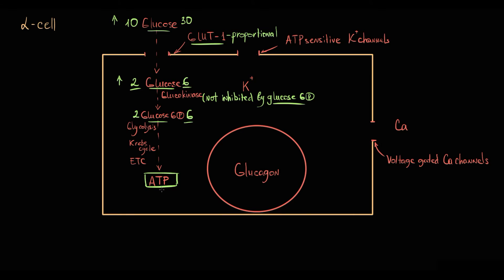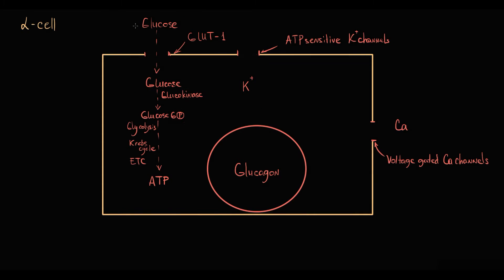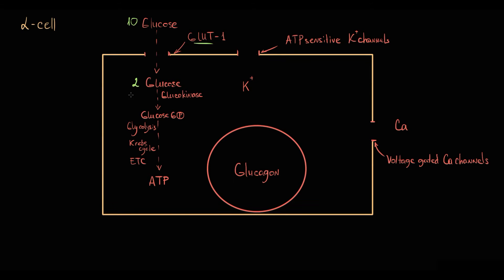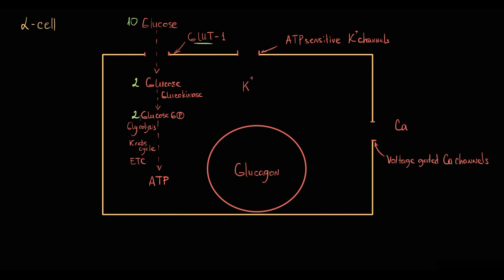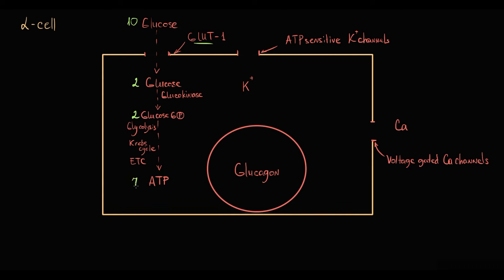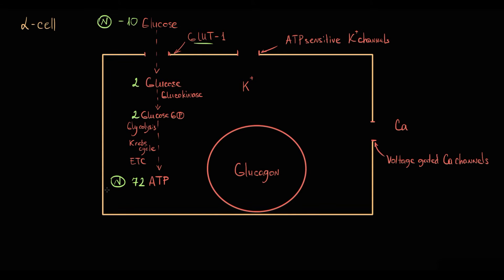By the amount of ATP molecules produced, alpha cells can determine changes in blood glucose level. For example, if for every 10 glucose molecules, the GLUT1 transporter brings 2 glucose molecules into the cell, then all 2 glucose molecules get phosphorylated at the same time, resulting in production of, for example, 72 ATP molecules. So let's assume that normal blood glucose level produces 72 ATP molecules per minute.